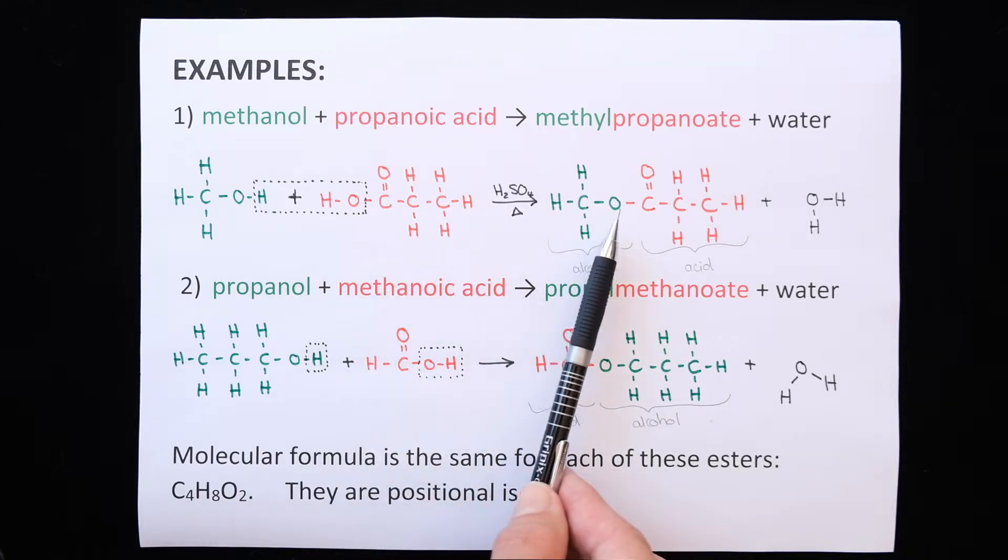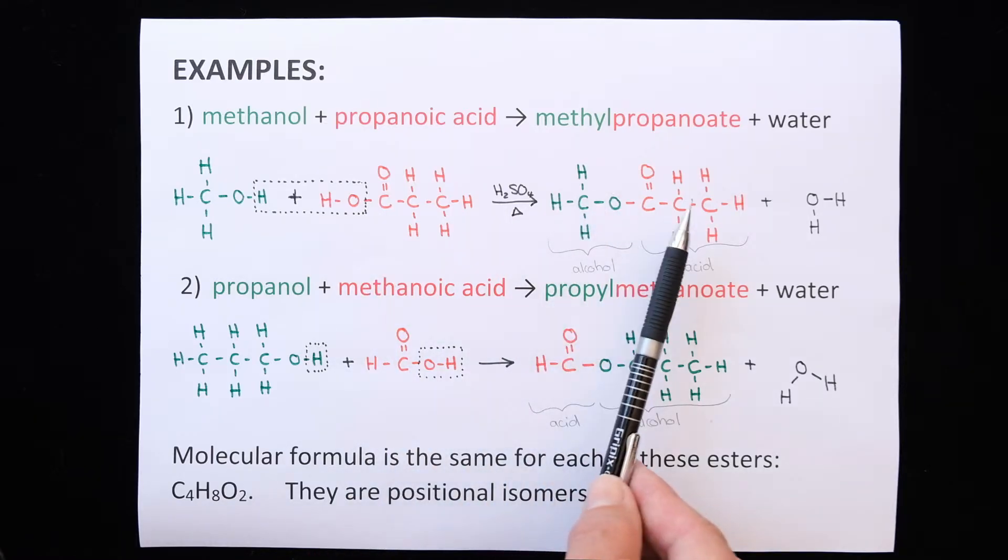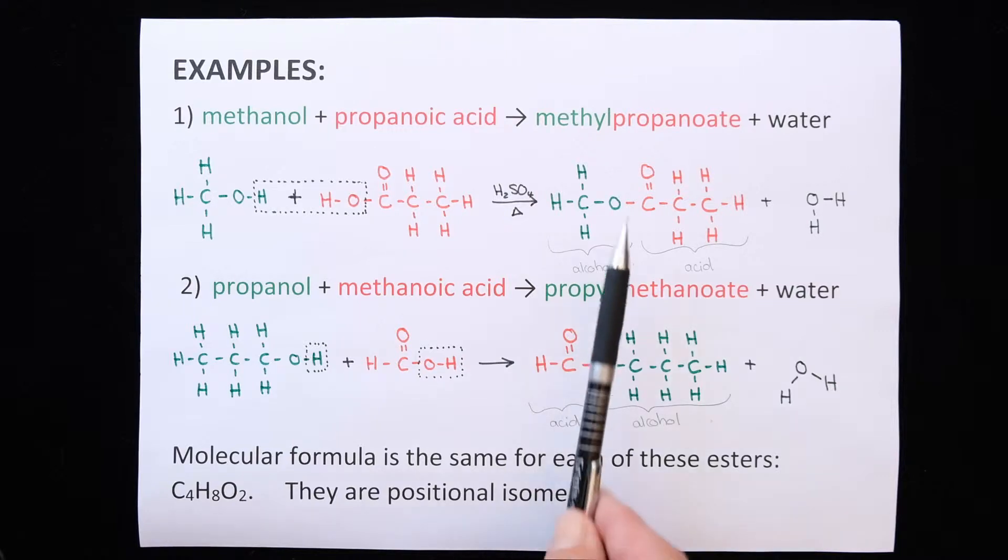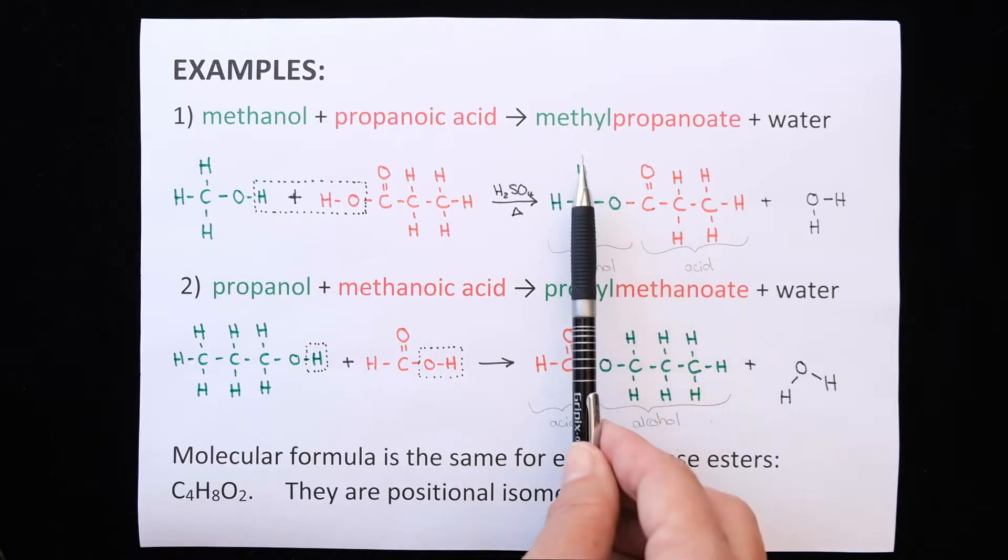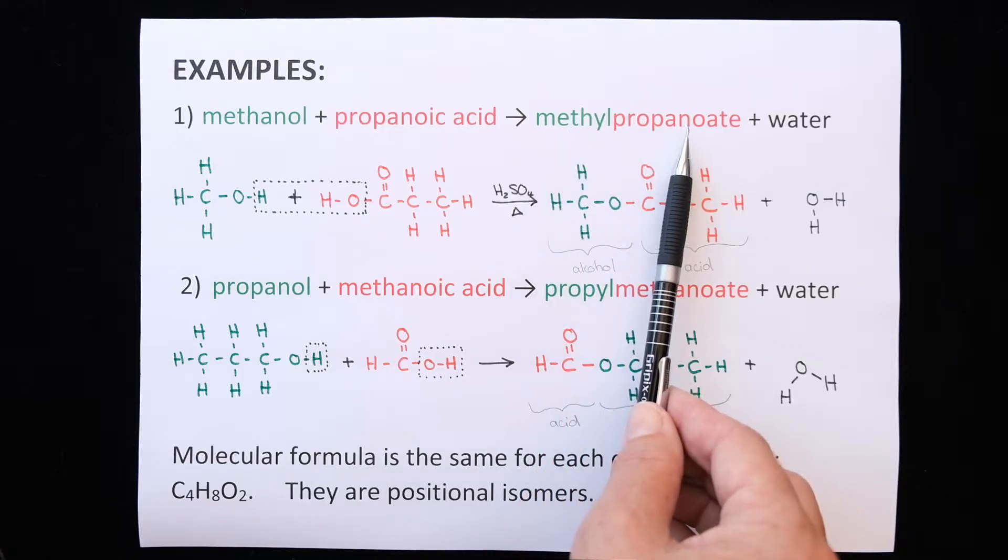There it is. And it makes a link between the alcohol and the carboxylic acid. The green part was from our alcohol, methanol. The red part was from our carboxylic acid, propanoic acid. So the name is methylpropanoate.